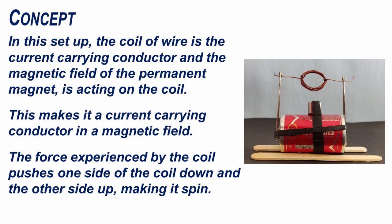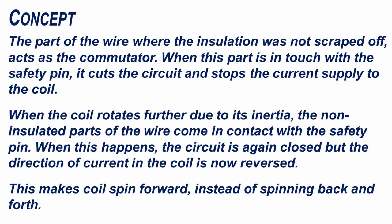The part of the wire where the insulation was not scraped off acts as the commutator. When this part is in touch with the safety pin, it cuts the circuit and stops the current supply to the coil. When the coil rotates further due to its inertia, the non-insulated parts of the wire come in contact with the safety pin. When this happens, the circuit is again closed but the direction of the current in the coil is now reversed. This makes the coil spin forward instead of spinning back and forth.